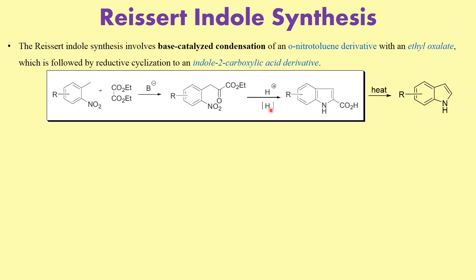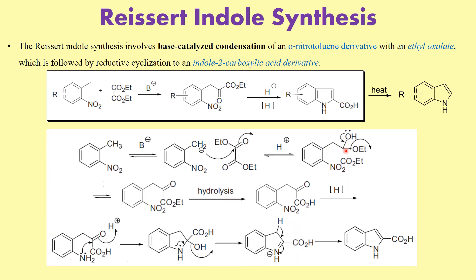Now if you do this reduction with palladium on carbon under neutral conditions, what you will get is an ester. But if you do the reductive cyclization in the presence of zinc in acetic acid, then what you will end up getting is the acid. Zinc in acetic acid reduces the nitro group to NH2 and at the same time hydrolyzes the ester to the acid. And if you then heat this indole-2-carboxylic acid, there will be a decarboxylation to give you the indole. So it's a very good method for the preparation of carboxylic derivatives of indole as well as the indole itself.